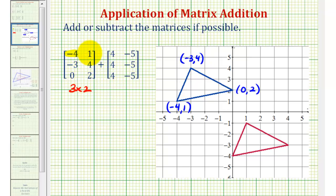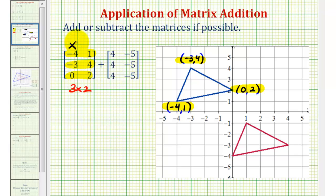This row represents this vertex, this row represents this vertex, and this row represents this vertex. So notice how the first column contains the x coordinates and the second column contains the y coordinates.